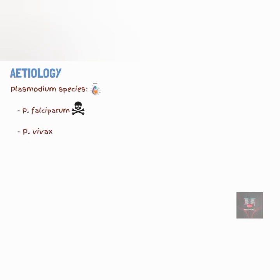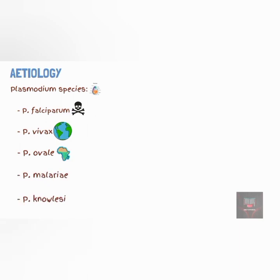Plasmodium vivax, which has the widest distribution; Plasmodium ovale, which is common in West Africa; Plasmodium malariae, which has the rarest distribution; and Plasmodium knowlesi, which can also be found in other primates.